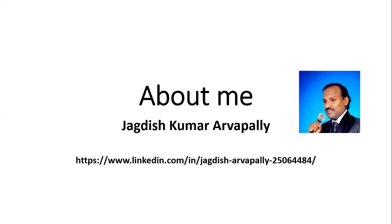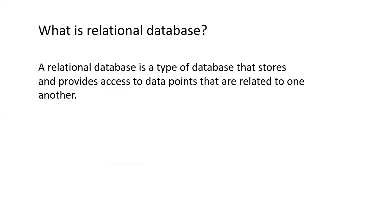There are a lot of differences between DBMS and RDBMS. A relational database is a type of database that stores and provides access to data points that are related to one another. In RDBMS, one table is related to another — for example, a customer table stores customer ID, phone number, email, and so on, while an orders table stores the order ID, product purchased, and quantity. These two tables are related through a common column or attribute called a key.